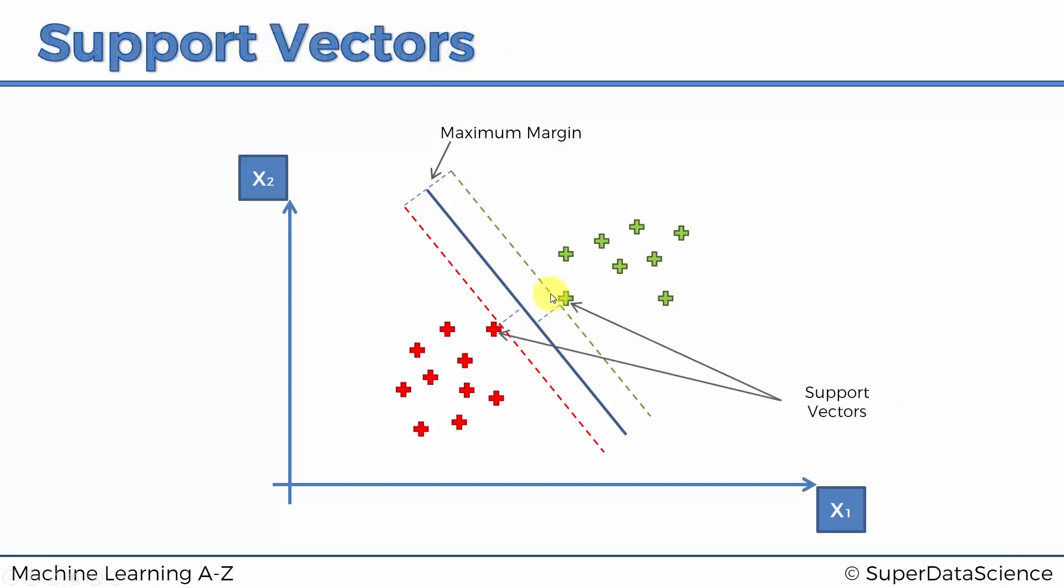These two points are actually called the support vectors. These two points are supporting this whole algorithm. Even if you get rid of all the rest of the points, nothing will change. The algorithm will be exactly the same. These other points don't contribute to the result of the algorithm. Only these two points are contributing, and therefore they're called the support vectors.